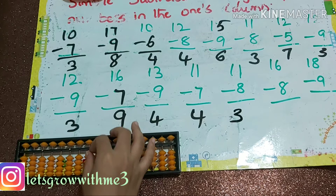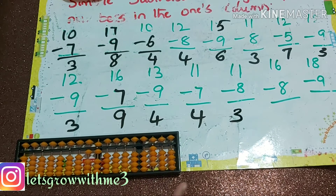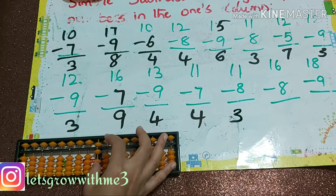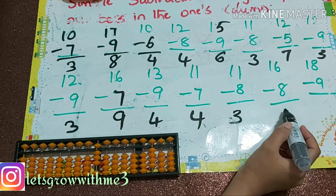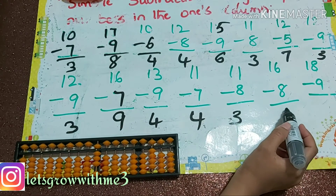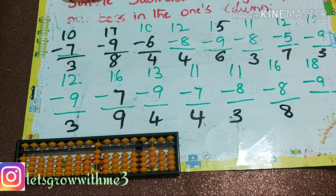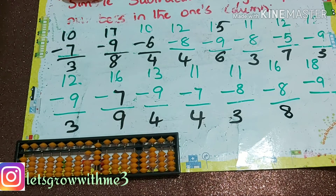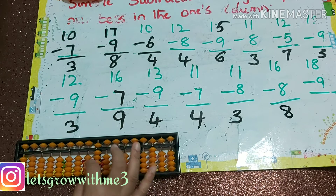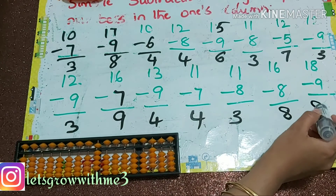Next one: 16 minus 8 — minus 10 plus 2, our answer is 8. Next one: 18 minus 9 — how to do minus 9? Minus 10 plus 1. Our answer is 9.